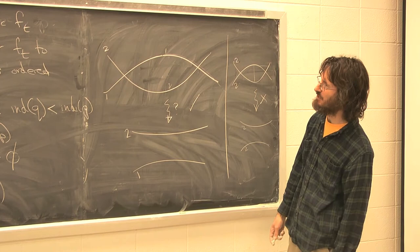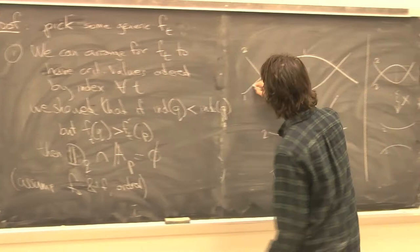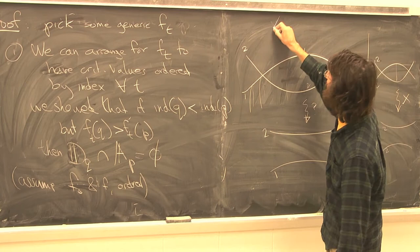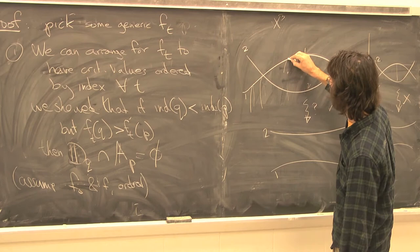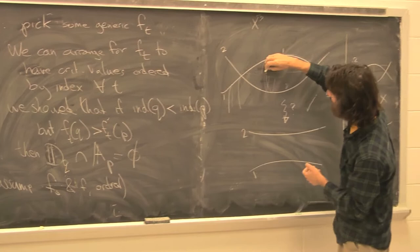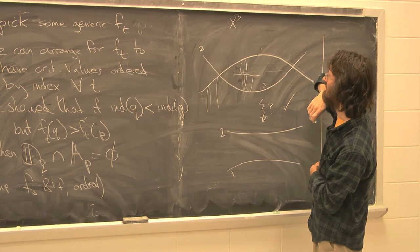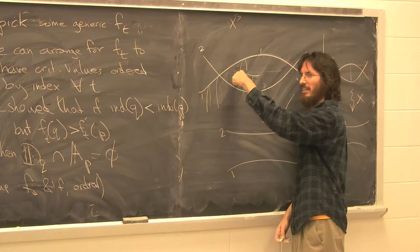So the first step is to keep critical values ordered by index for all time. The idea is that the descending manifold for an index-1 critical point is one-dimensional, and so is the descending manifold for an index-2 critical point. Suppose we're in a three-dimensional manifold — they're both codimension-2. In any level set, the ascending manifold for the index-2 sweeps out a one-dimensional arc over time, and they can remain disjoint in three dimensions.